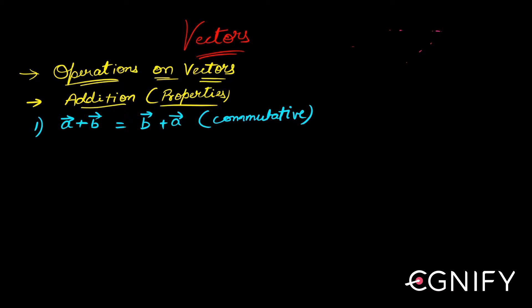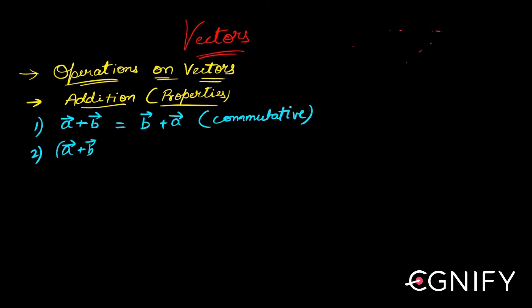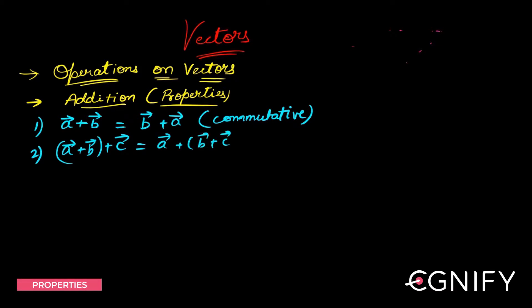The next property says that vectorial addition is associative — just like your normal algebraic addition. So a-bar plus b-bar, plus c-bar is equal to a-bar plus the quantity b-bar plus c-bar.